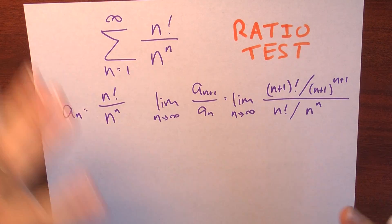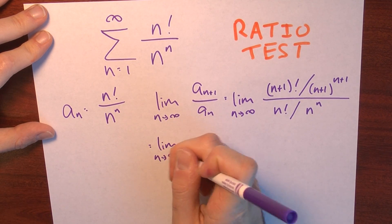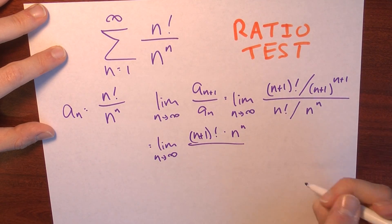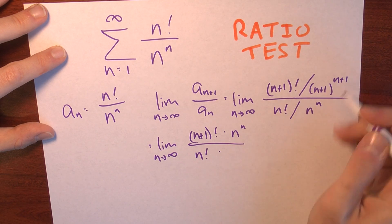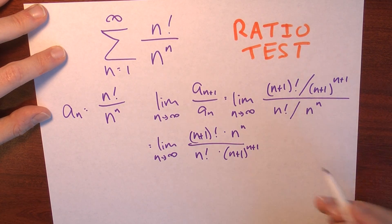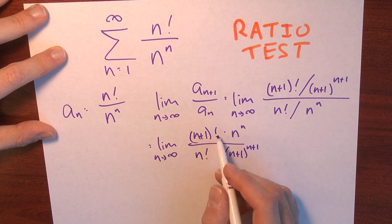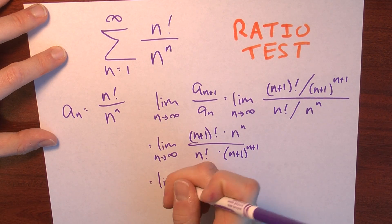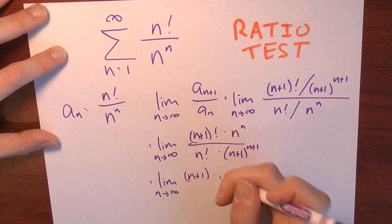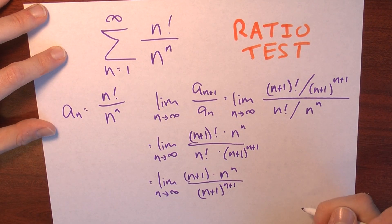That can be simplified. I've got a fraction with fractions in the numerator and denominator, so I can clean that up. This is the limit as n approaches infinity of (n+1)! times n^n, divided by n! times (n+1)^(n+1). Now I've got (n+1)! in the numerator and n! in the denominator, so the n! cancels everything except for the (n+1) term. So this is the limit as n approaches infinity of just (n+1) times n^n divided by (n+1)^(n+1).